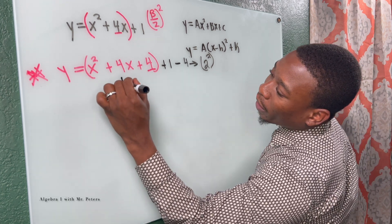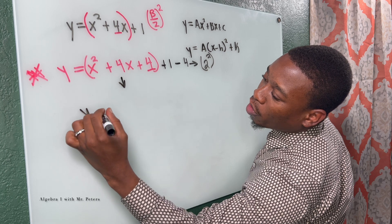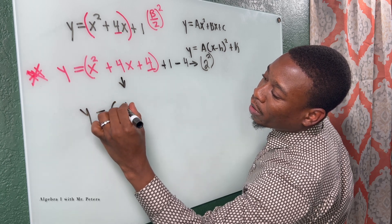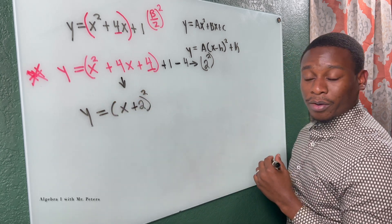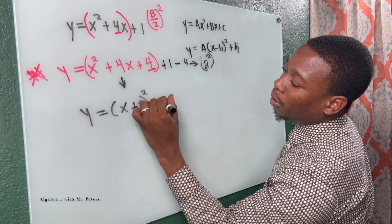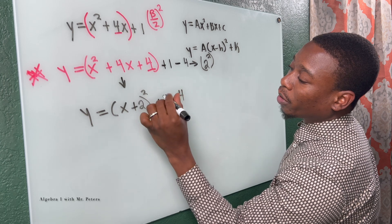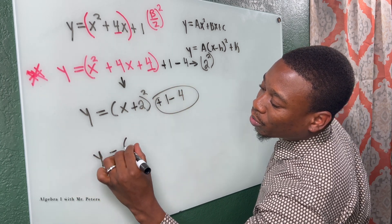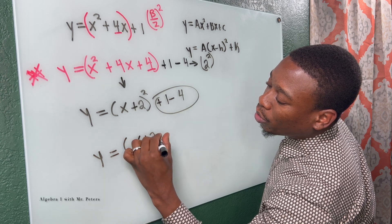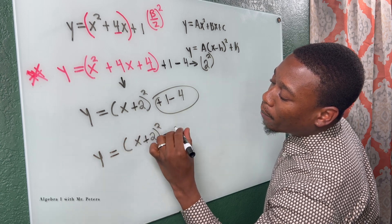Remember, this is the product of B divided by two squared. So this is really two squared. If you see it as two squared, just understand it's the same representation. So now we break this down to its binomial. We have Y is equal to X plus two squared, and then on the outside, plus one minus four. So now we combine that, we're gonna have Y is equal to X plus two squared minus three.